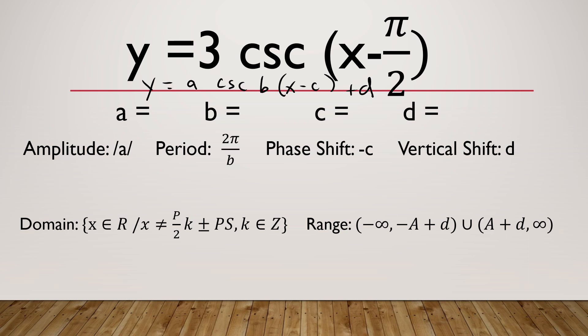Therefore, we can now identify the values of a, b, c, and d. For a, a is equal to 3. For b, as you can see, there is no number here — there is an invisible number, and that is 1. For c, the value of c is negative pi over 2. d is the constant term, and as you can see, there is no constant term in the given function. Therefore, d is equal to 0.